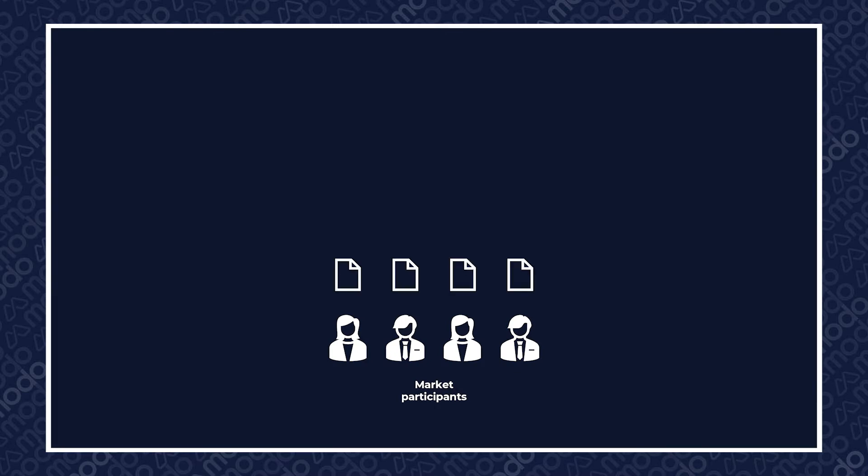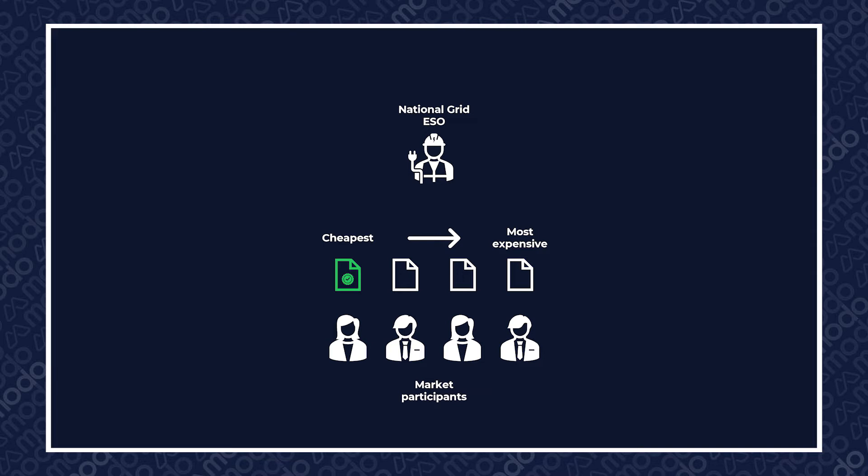Before we dive into pay as bid versus pay as clear, let's take a quick detour into how the electricity system operator, or ESO, procures ancillary services through auction. In ancillary services auctions, market participants submit a price they are willing to be paid for providing the service. Once all bids have been submitted, the ESO will accept bids starting at the cheapest until its requirement for the service is fulfilled. This is known as clearing the market, at which point all providers are notified of whether they have been accepted or rejected.